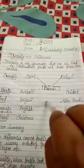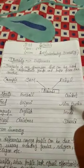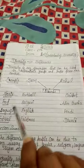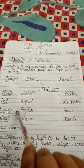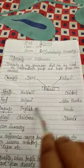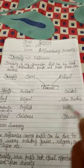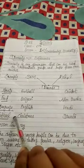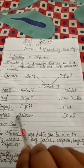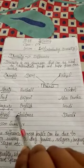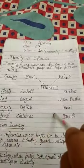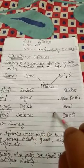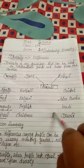Rahul likes to eat alut ratha. Sam speaks English. Rahul speaks Hindi. Sam's favourite festival is Christmas and Rahul's favourite festival is Diwali.